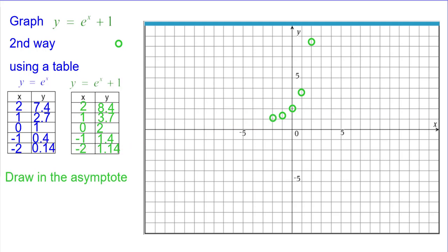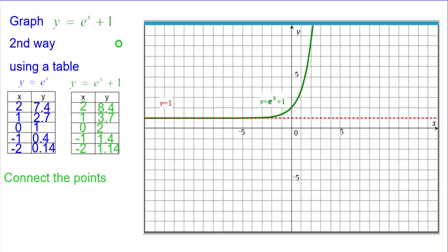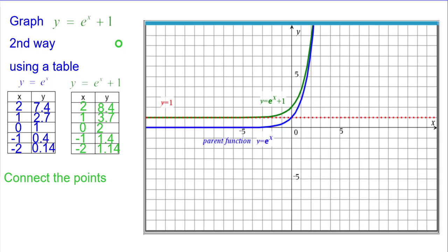We'll draw on the asymptote at y equals positive 1. And then we can go ahead and connect the points and get the exponential growth function. And there it is compared to the parent function.